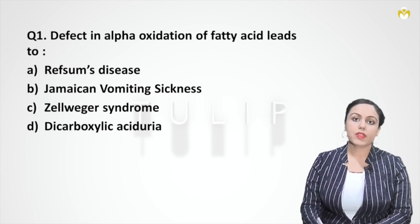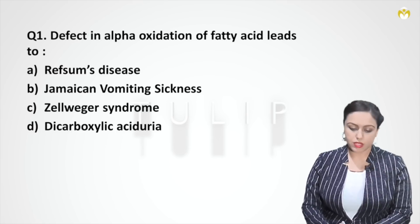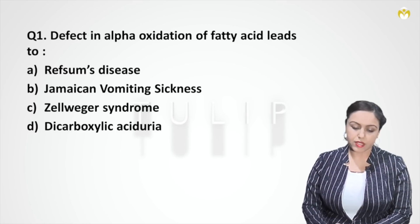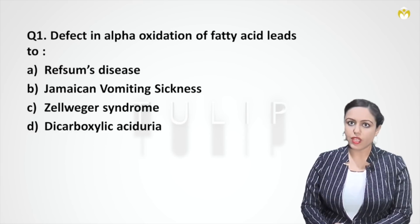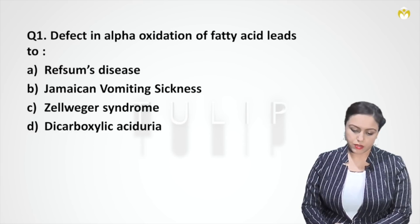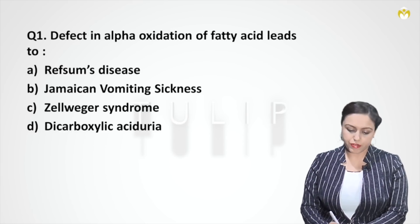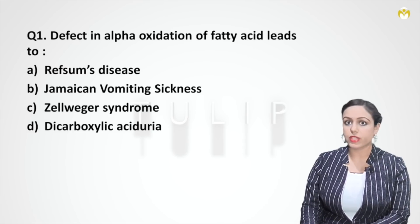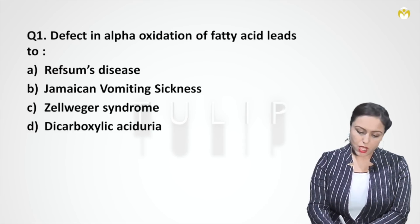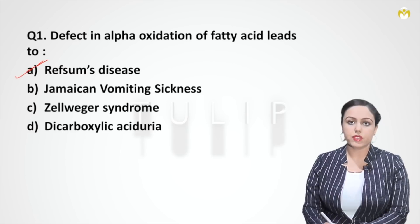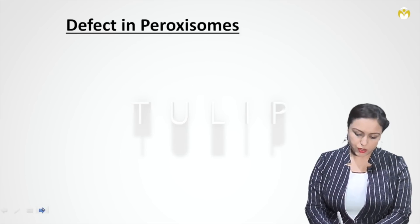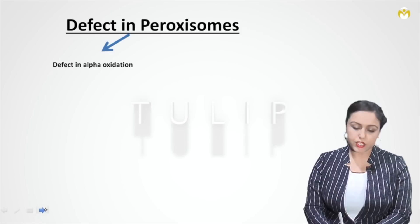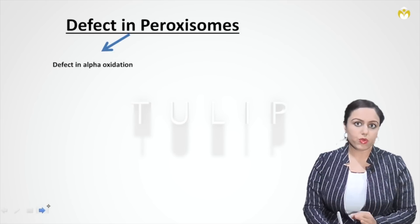Let's get started. The first question is: defect in alpha oxidation of fatty acid leads to — this is a frequently asked question. Options given are Refsum's disease, Jamaican vomiting sickness, Zellweger syndrome, and dicarboxylic aciduria. The answer here is Refsum's disease.